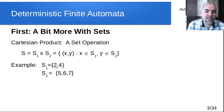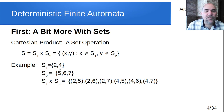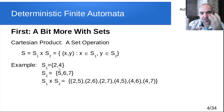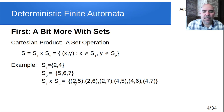Here's an example. Set one contains two elements: two and four. Set two has three elements: five, six, seven. When we cross those, S1 cross S2 gives all possible combinations: two-five, two-six, two-seven, four-five, four-six, four-seven. A good way to verify you got them all: the size of S1 is two, the size of S2 is three, and two times three equals six — which is exactly how many pairs we have.